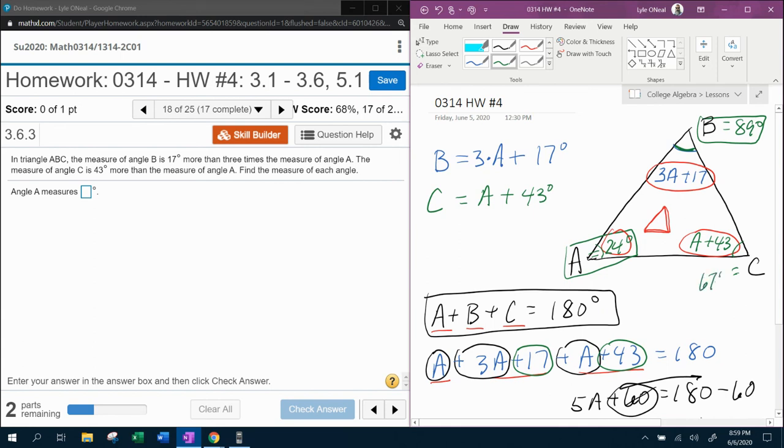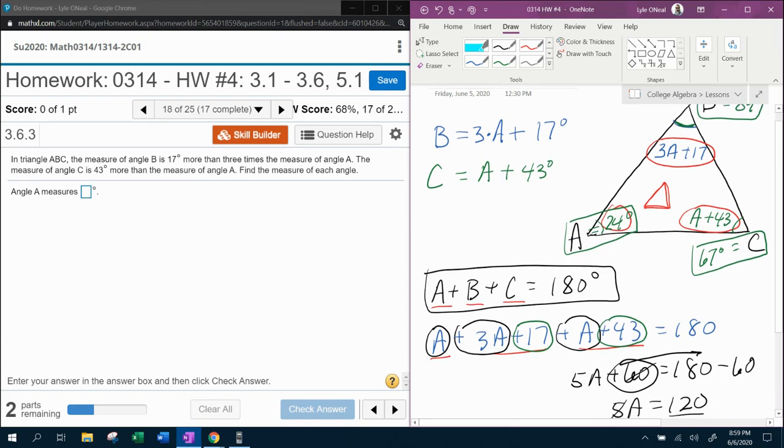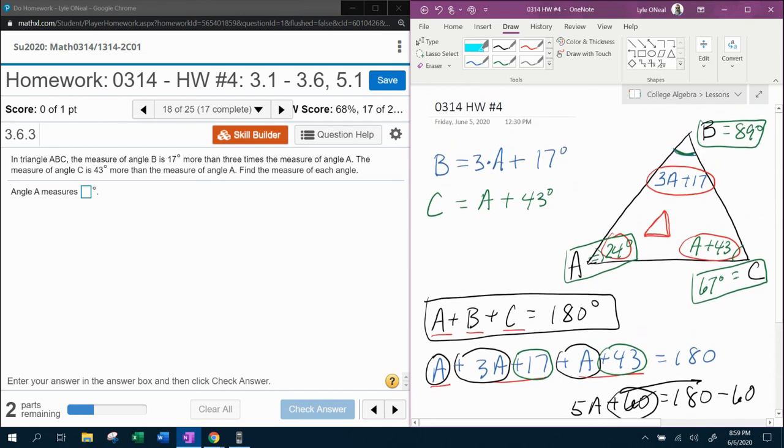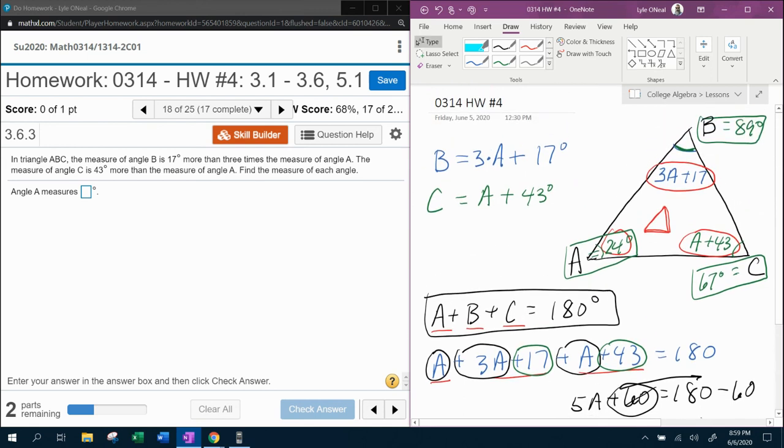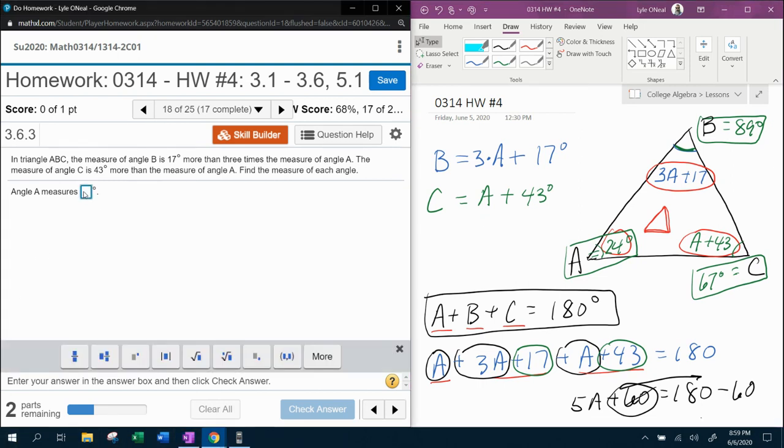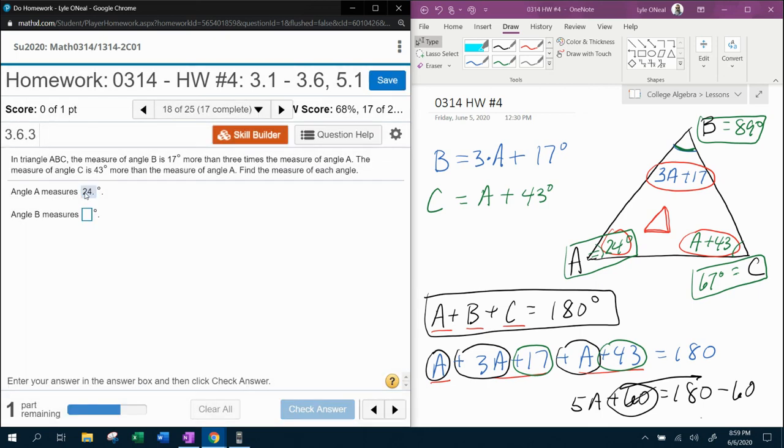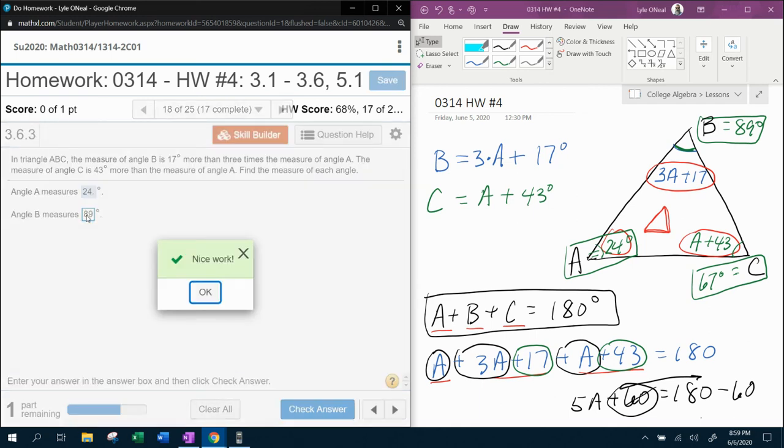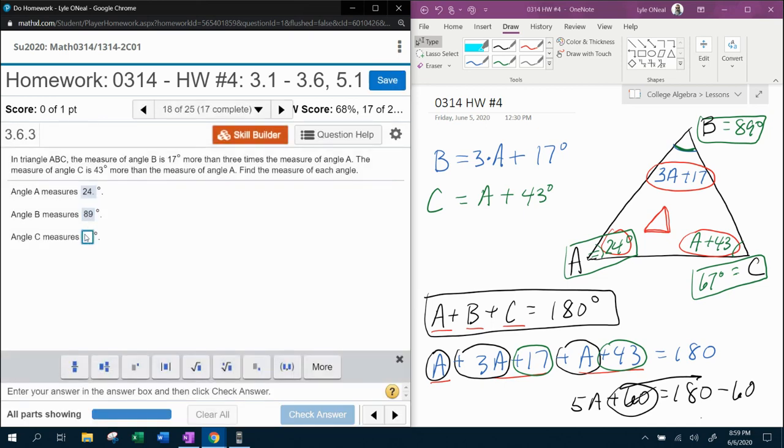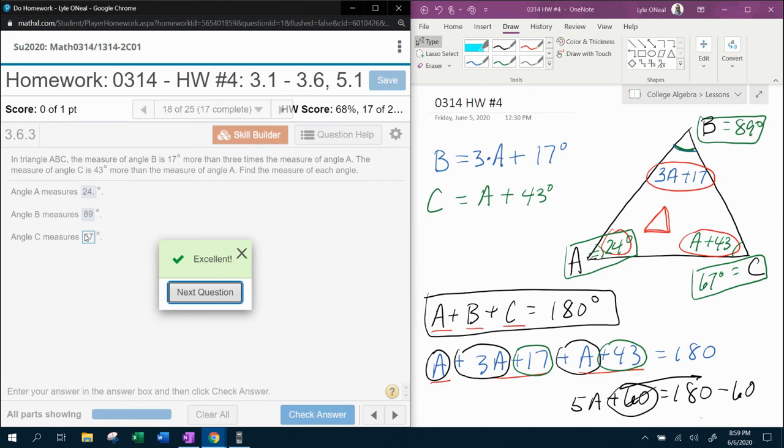B is 89, A is 24. So I now have, through the power of algebra, I have found the measure of all three angles. Let's check it out. A, measure of angle A is 24. Measure of angle B is 89, and the measure of angle C is 67. Bam. So I hope all of that was helpful. If you have any questions or comments, feel free to leave those in the comment section below, or you can text me. And thanks for watching.